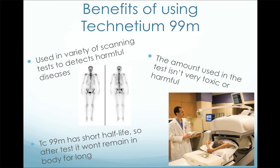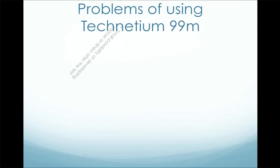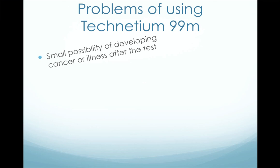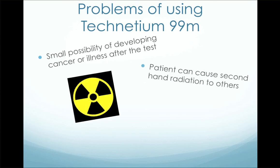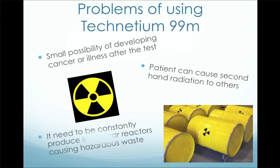There are also some problems involved in using technetium-99m. Some of these problems include that exposure to TC-99m carries a very small possibility of developing cancer or leukemia in the patient. Also, the radiation that goes into the patient stays with them for a day or so, and this can cause second-hand radiation to others. Because TC-99m has a half-life of 6 hours, it needs to be constantly produced in nuclear reactors, and this is an issue as the waste from the reactor is dangerous.